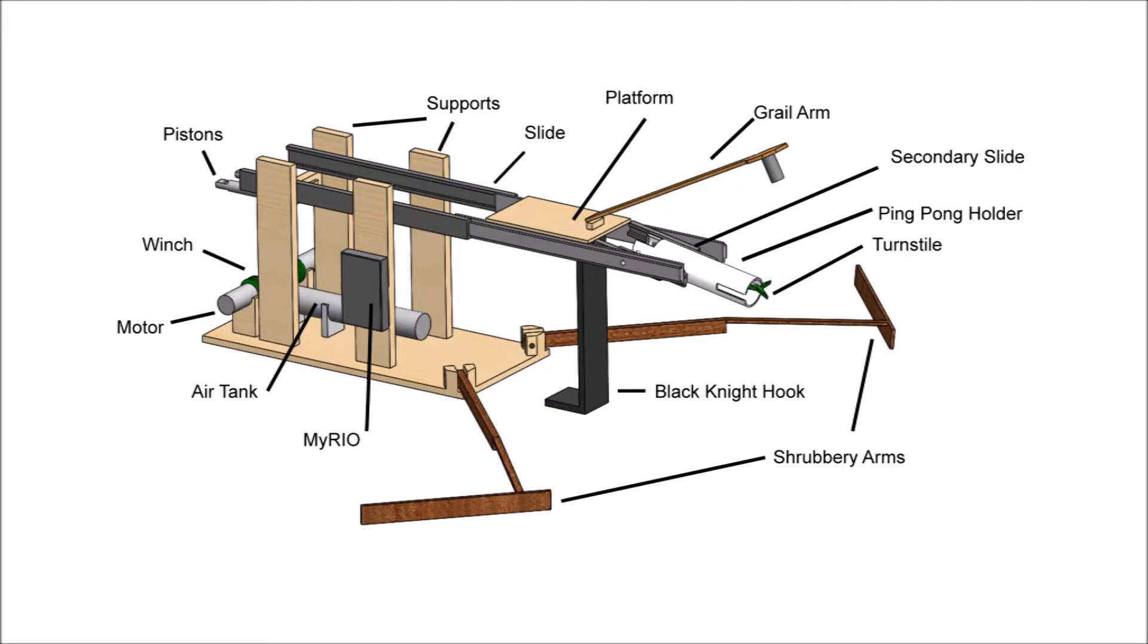Under box number 5 is the Double Slider. It features a horizontal slide to push the grail arm and the ping pong holder to the Beast Slayer. A secondary slide extends to position the ping pong holder correctly. The slide would be activated by a pair of pistons to give the slider its initial momentum, which would allow the secondary slide to fall on its own.